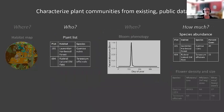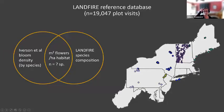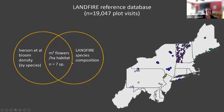The next step is trying to characterize plant communities with existing datasets — which plants, who and how much. Here I'm using the LANDFIRE reference database. In the Northeast there are quite a lot of plot visits, and I'm looking at the overlap of which species are present in the LANDFIRE reference database and also in this empirical dataset we have of bloom density. By combining these two things, I can estimate — again — meters squared of flowers per hectare of habitat. We're still working on the latest version of this empirical dataset, but that should be coming soon.